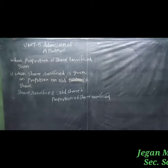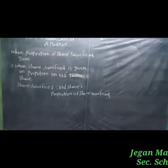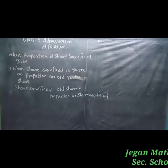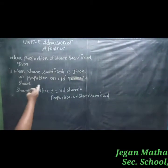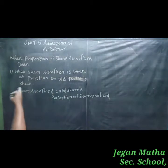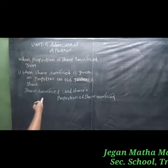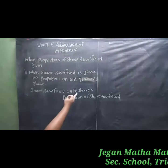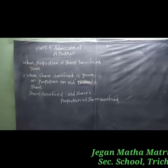Good morning students, welcome to 12th standard accountancy, Unit 5 - Admission of Partner. In this video we are going to see when a proportion of share sacrifice is given — when share sacrifice is given as a proportion of the old partner's share. The formula is: share sacrifice equals old share multiplied by proportion of share sacrifice.